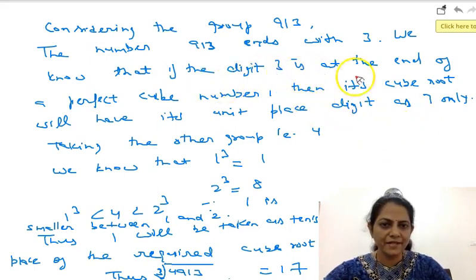So if the last digit of a perfect cube number is 3, then its cube root will have its unit place as 7 only. Taking the other group, that is 4.